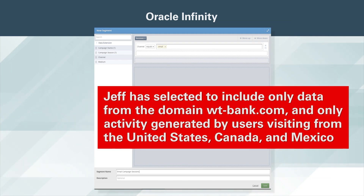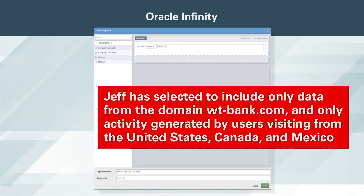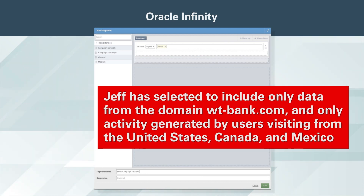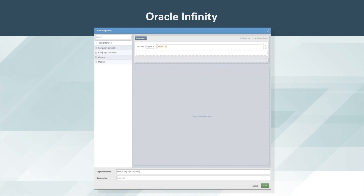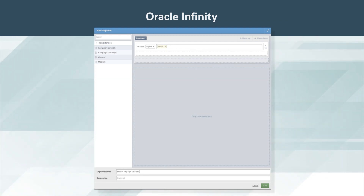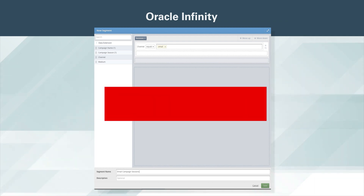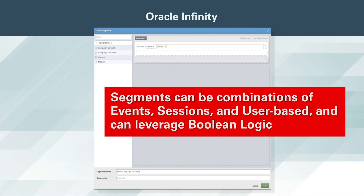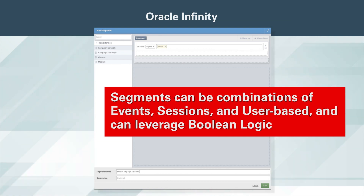Jeff has selected to include only data from the domain WTBank.com, and only activity generated by users visiting from the United States, Canada, and Mexico. Segments can be simple, such as collating all events from a particular domain. When necessary, segments can also be complex and flexible. For example, segments can be combinations of events, sessions, and user-based, and can leverage Boolean logic.